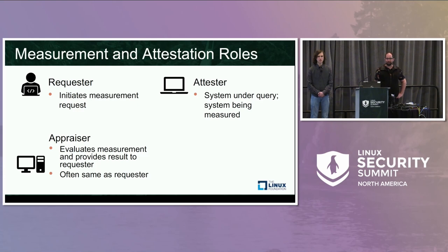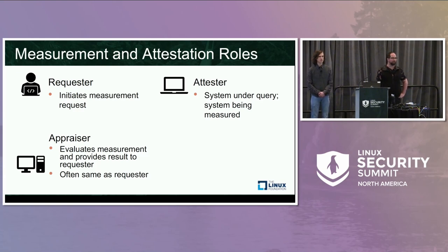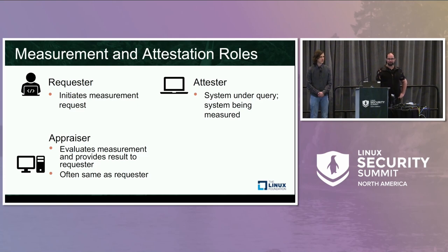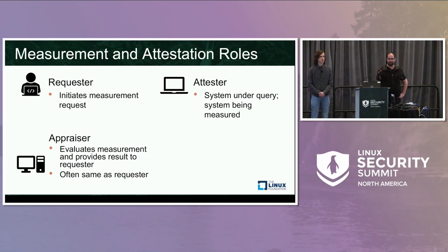More formally, we've divided the measurement and attestation process into three roles. There is a requester, which is an entity that initiates a measurement request — that might be a system administrator or a piece of system software. The attester is the system under query, the system that is being measured. And the appraiser is the final role, which actually evaluates the measurement, compares it against a knowable baseline, and determines whether that system is in a trustworthy state. In many cases the requester and appraiser may be the same, but our design supports the case that they might be separate entities.